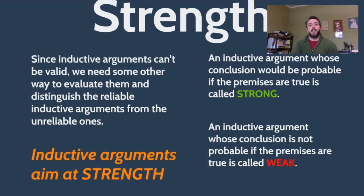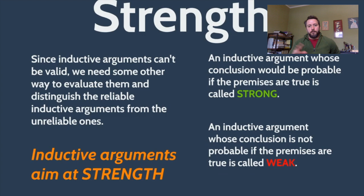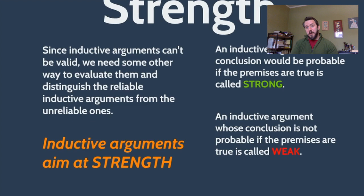If the truth of the premises means the conclusion is not particularly likely, we call that argument weak. Notice something different about strength versus validity: validity was a binary question — do the premises guarantee the conclusion, yes or no? Strength is mushier — it refers to how probable it is that the conclusion follows from the premises, and there's a whole spectrum of probability. Arguments can be very strong, very weak, or somewhere in the middle.